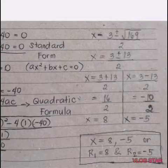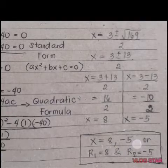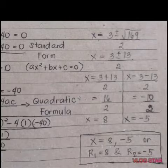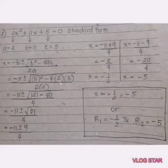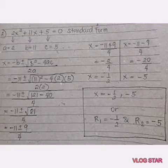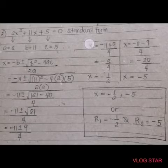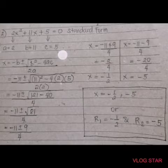Therefore, the values of x are 8 and negative 5, or the roots of the given quadratic equation are 8 and negative 5. Next is 2x squared plus 11x plus 5 equals 0. The given is already written in standard form for solving quadratic equations by the quadratic formula.